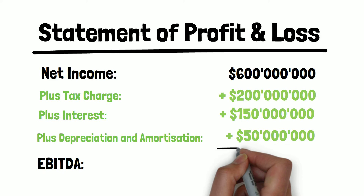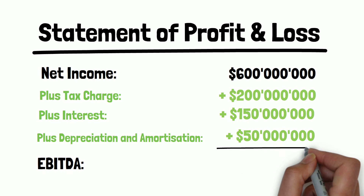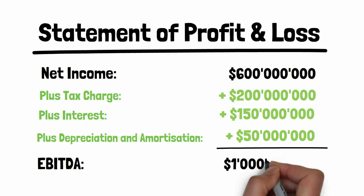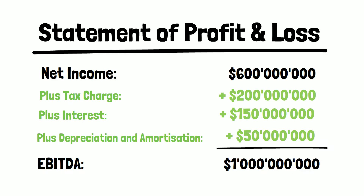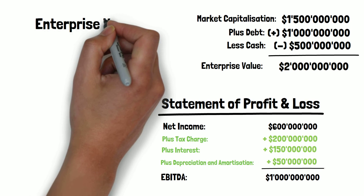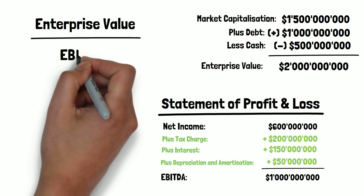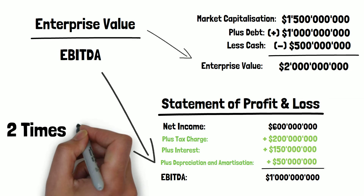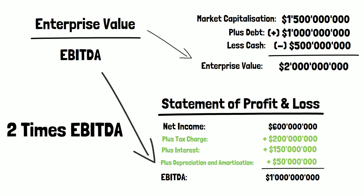We can now see that Chessboard Inc. has earnings before interest, tax, depreciation and amortization of $1 billion. Using the enterprise multiple, we can say that Chessboard Inc. trades at two times its EBITDA.